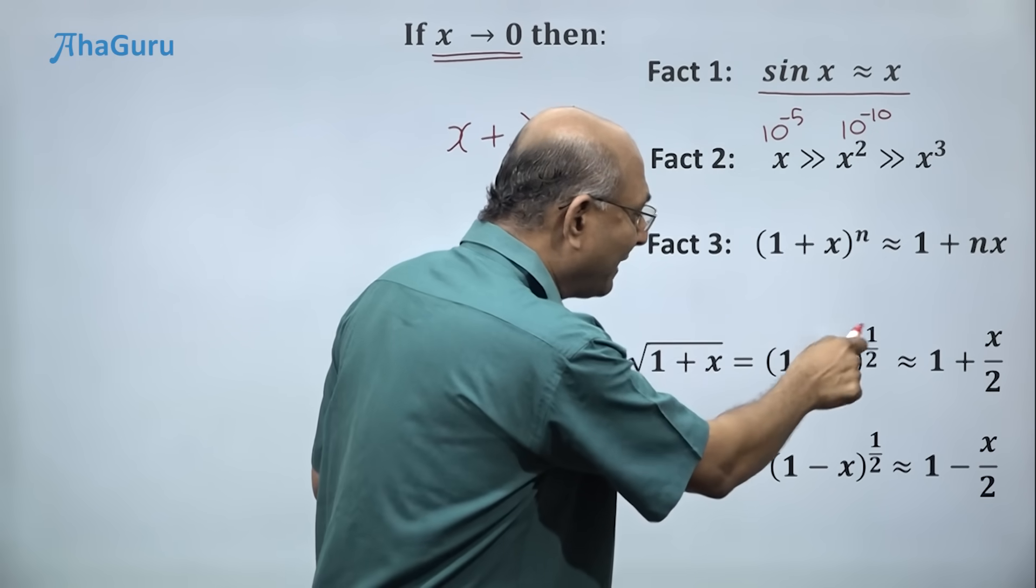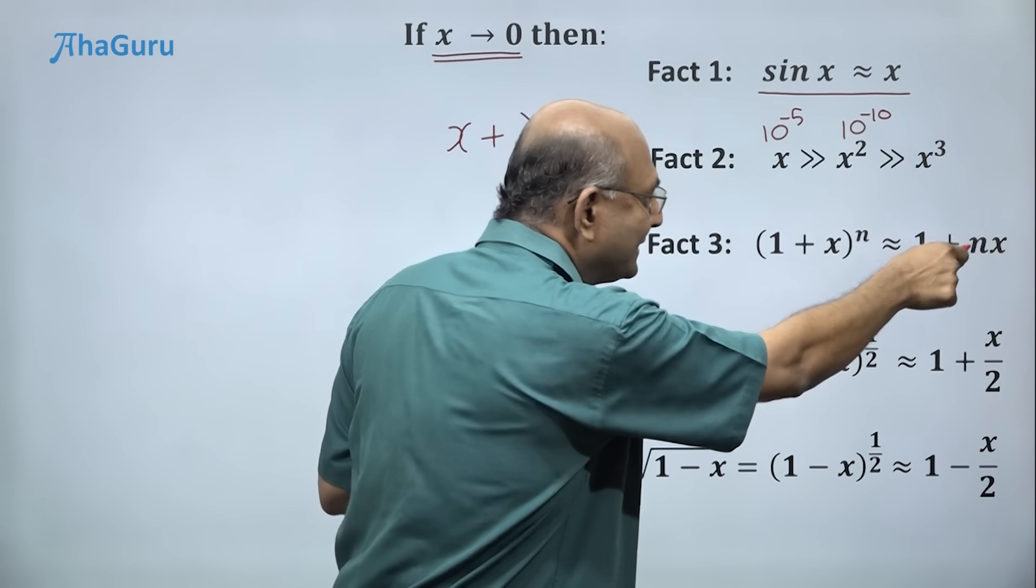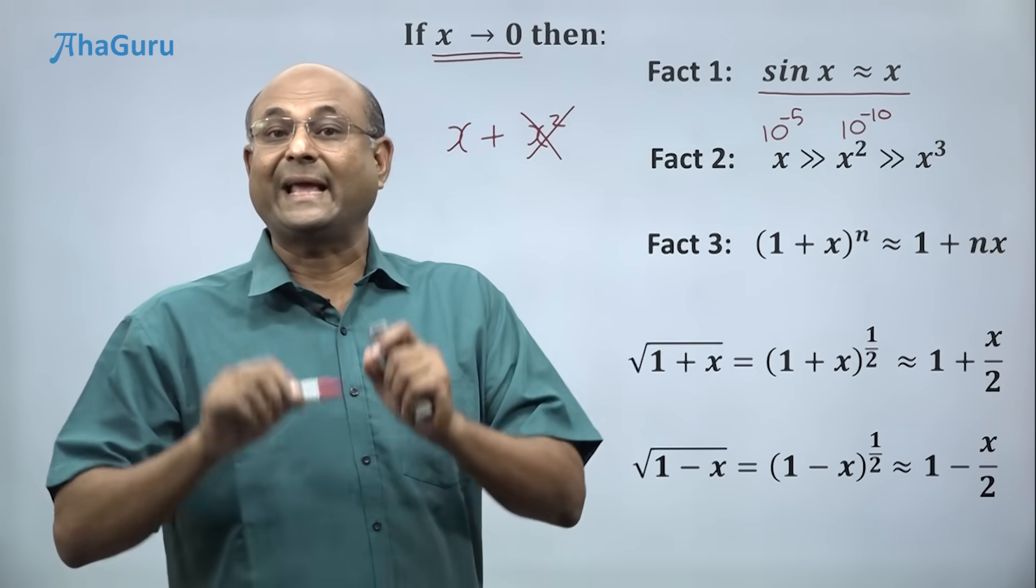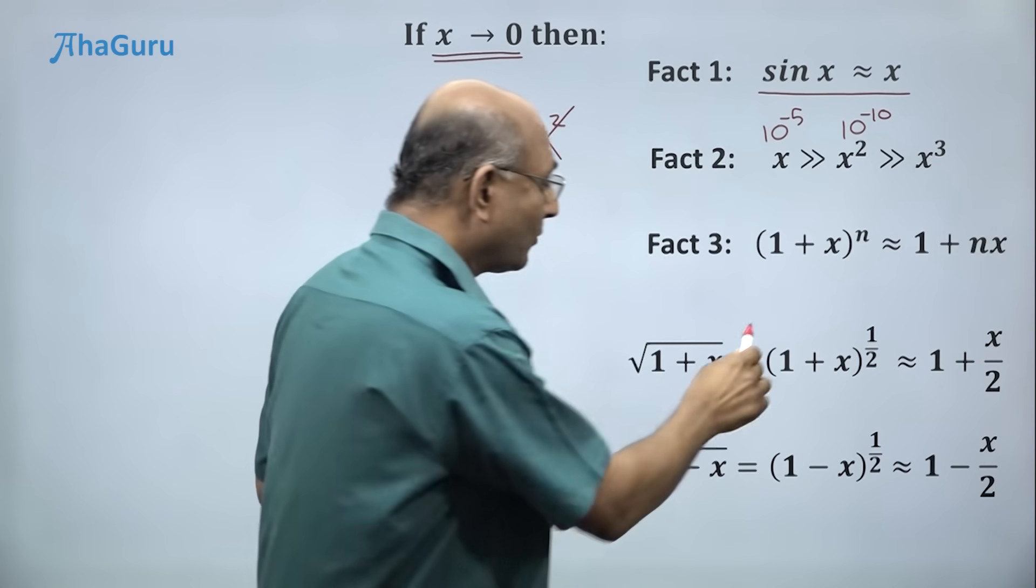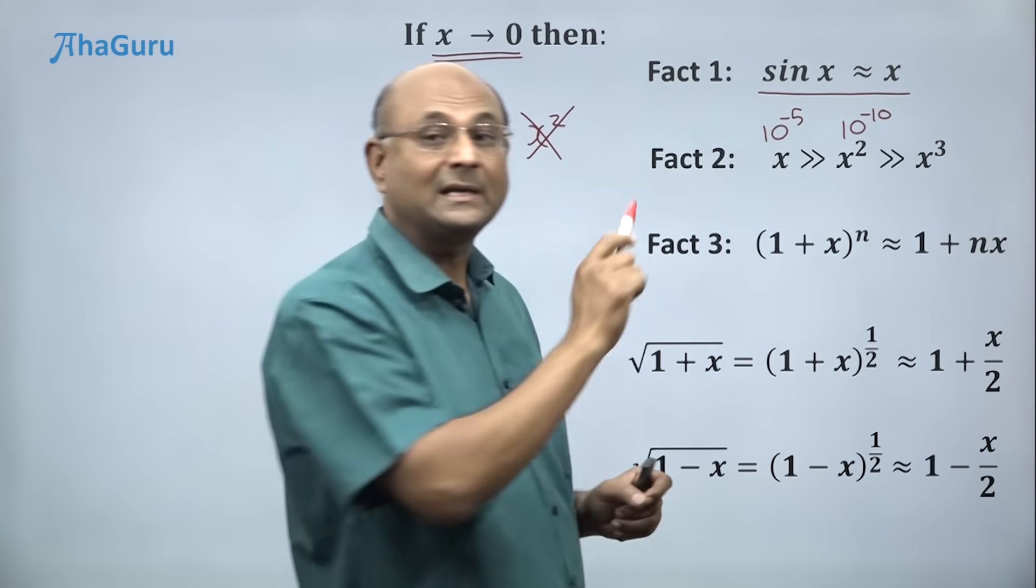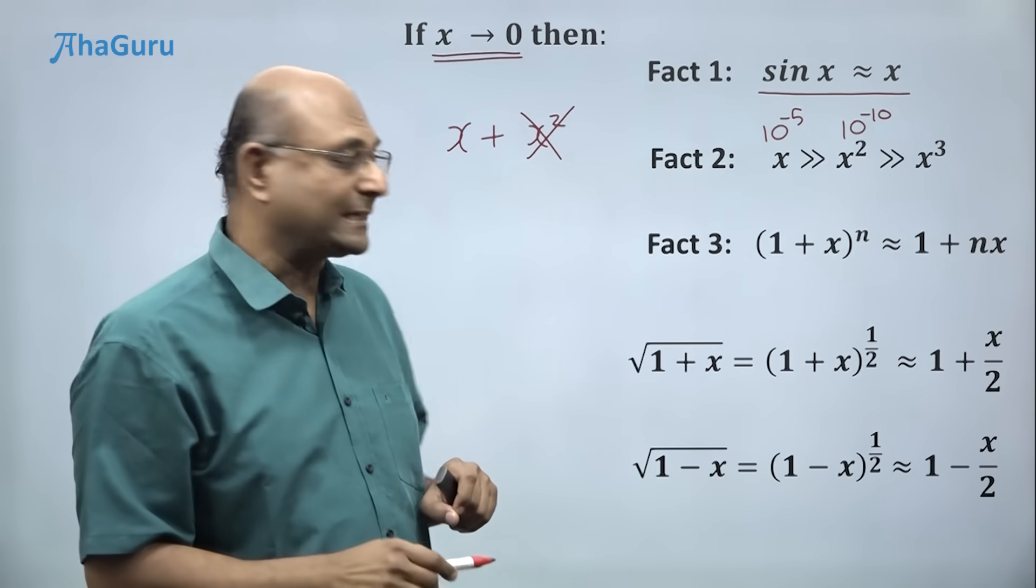Anytime you have a power n, you can bring that down and write it as 1 plus nx. Only valid if x is very small. So 1 plus x power half is 1 plus half times x, which is 1 plus x by 2.